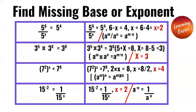Parenthesis 7 to the power of 2, end parenthesis, to the power of x is equal to 7 to the power of 8. In these kinds of problems, we would have to multiply the exponents. So 2 times x is equal to 8. So 8 divided by 2 is equal to x, so x is equal to 4.